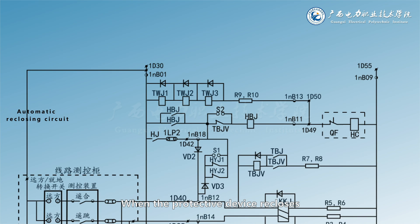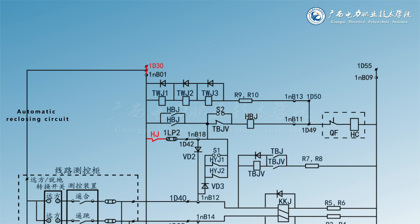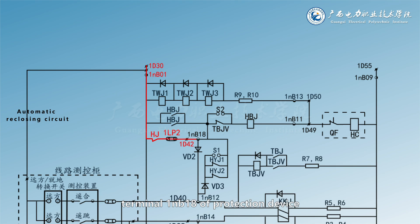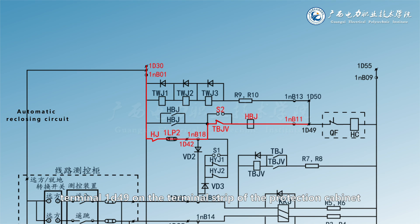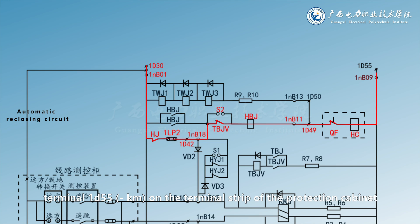When the protective device REC closes, its closing contact HJ is closed. Therefore, the closing current path is terminal 1D30, 1NB01, HJ, 1LP2, 1D42, 1NB18, TBJV and S2, HBJ, 1NB11, 1D49, QF, HC, 1NB09, 1D55. So the circuit breaker was closed again.